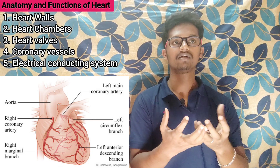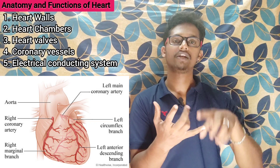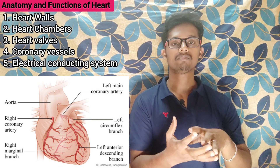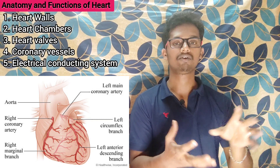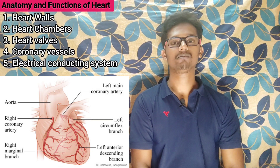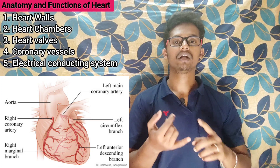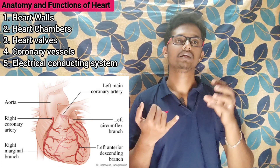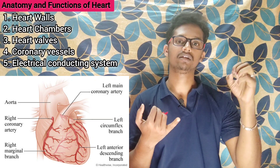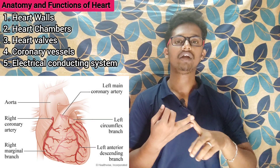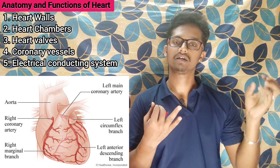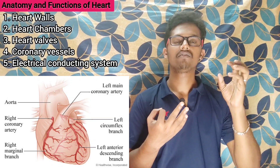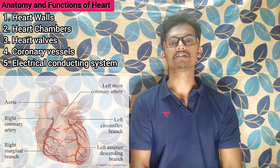Next, blood vessels of the heart. The heart needs its own blood supply — nutrients and oxygen — so there are blood vessels called coronary blood vessels. There are three types: arteries, which carry blood away from the heart; veins, which carry blood back to the heart; and capillaries, which are the smallest blood vessels where the actual exchange happens.